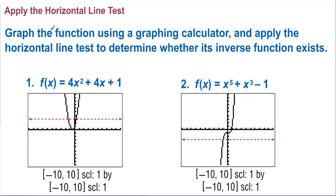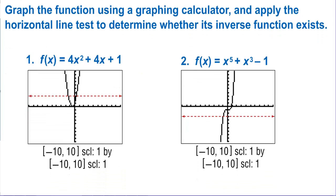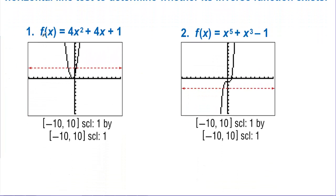Apply the horizontal line test: graph the function using a graphing calculator and apply the horizontal line test to determine whether its inverse function exists. Here we have a quadratic function in number one. The quadratic fails the horizontal line test, therefore its inverse will not be a function.